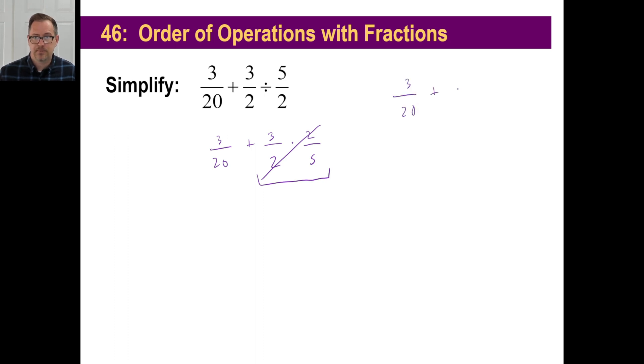So this is our new problem. Three twentieths plus three fifths. Let's find a common denominator. That's going to be 20, of course. That'll turn into a 20 and this will turn into a 12. So three plus 12 is 15 over 20 and we reduce that. Five goes into each one of those three times and then four times. A piece of cake.